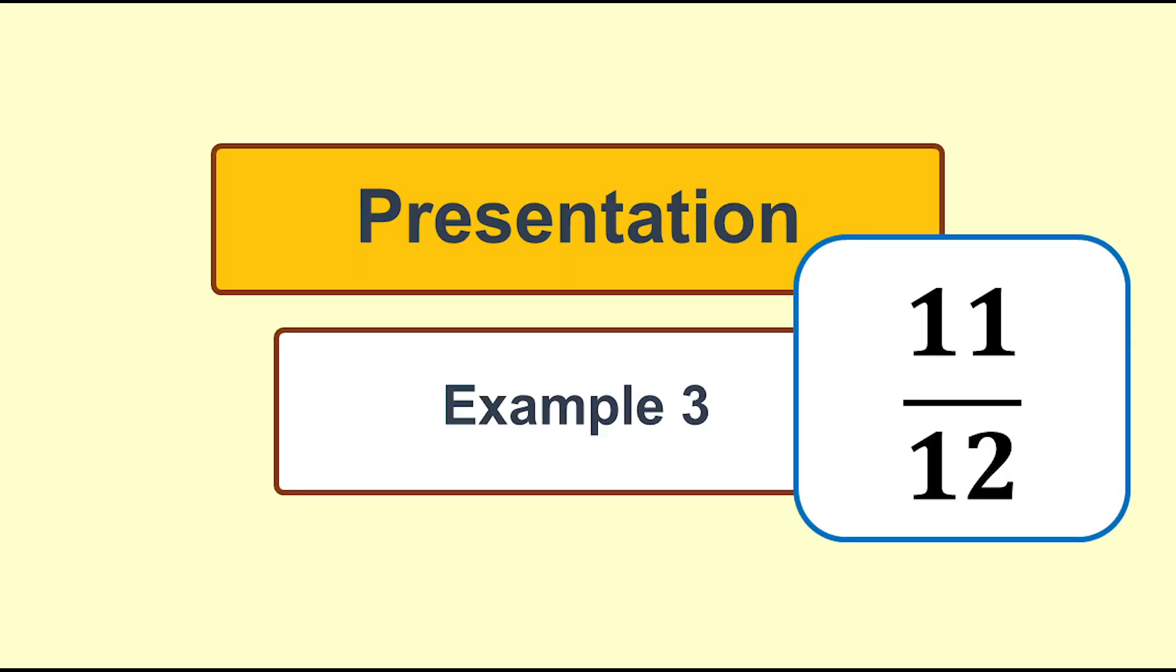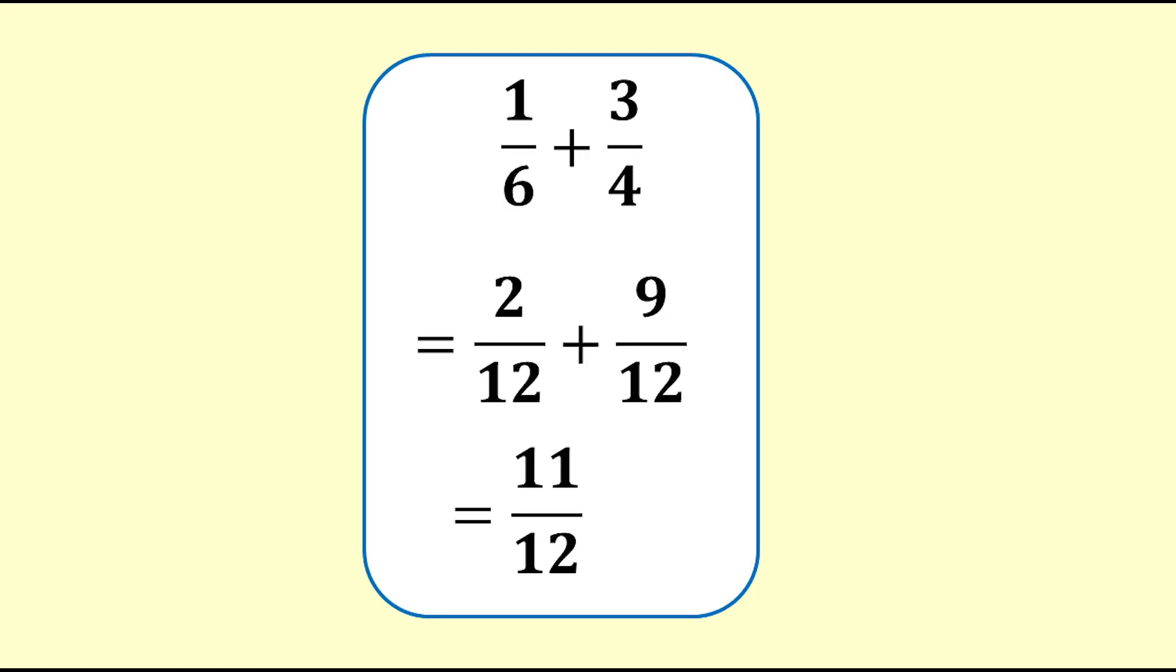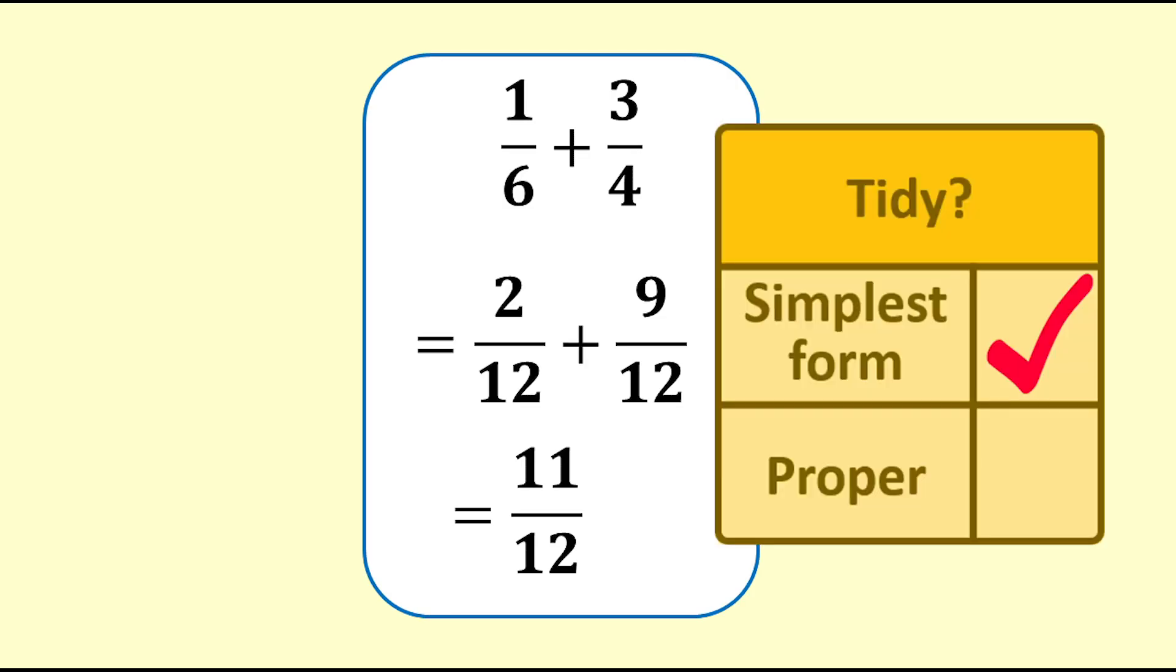Sometimes we do not need to do anything to the answer. 1 sixth plus 3 quarters equals 11 twelfths. 11 twelfths is in its simplest form, and it is a proper fraction, so it stays as it is.